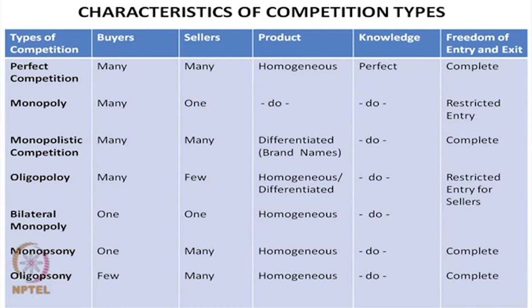We would like to speak about the characteristics of competition types. In the first column we write down the different types of competitions, and in the other columns we write the various characteristics in terms of the number of buyers, the number of sellers, the feature of the product, knowledge about the product, and freedom of entry and exit of buyers and sellers in the market. Depending on these characteristics, we shall define and explain different types of competition.